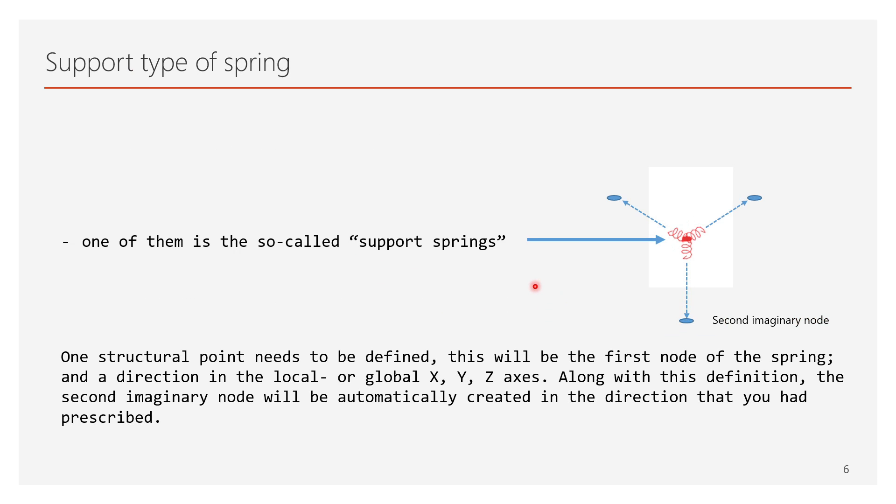For the support type of springs, you need to define one structural point, this will be the first node of the spring, and the direction in the local or global x, y, z axes. Along with this definition, the second imaginary node will be automatically created in the direction that you had prescribed.